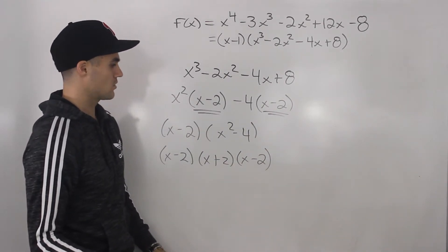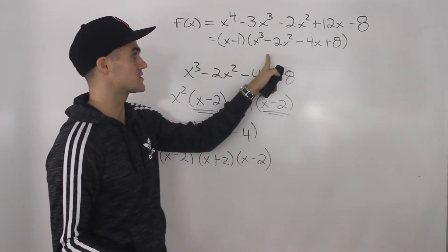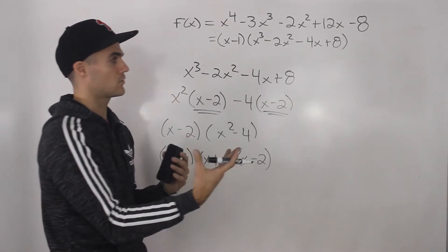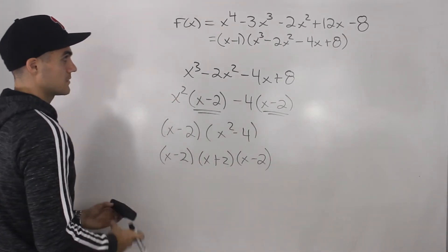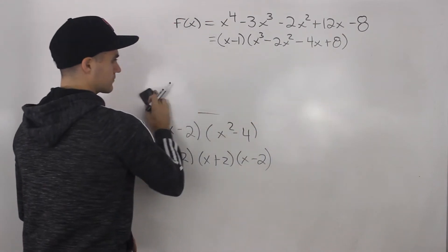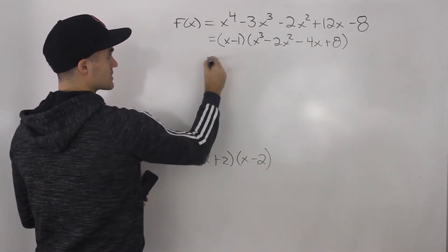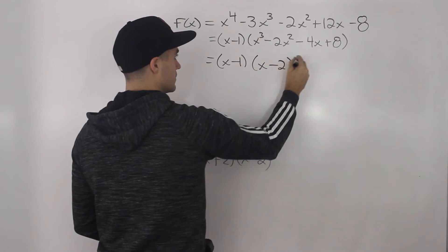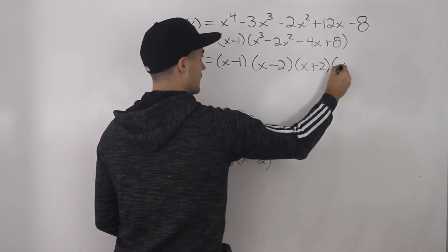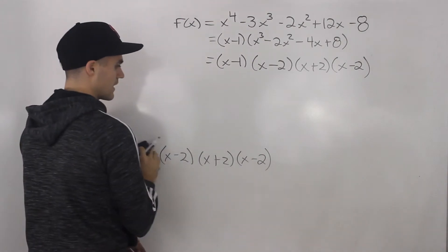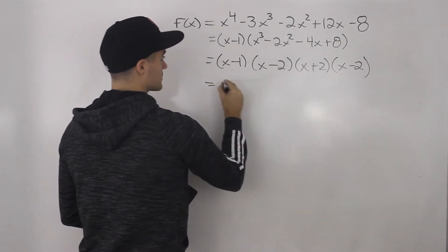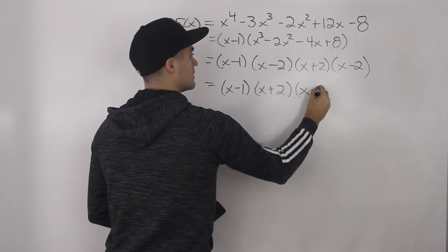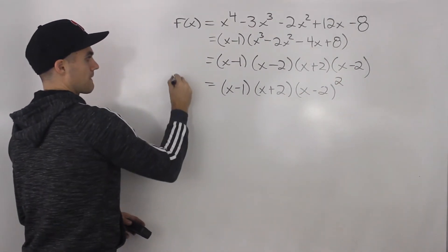You can also do it the long way by plugging in 2 or negative 2 into the cubic to get 0, then doing long division to get a quadratic quotient to factor — you'd get the same answer. So the cubic factors into x minus 2, x plus 2, and x minus 2. Since the x minus 2 factors repeat, we write the full factored form as (x minus 1)(x plus 2)(x minus 2) squared.